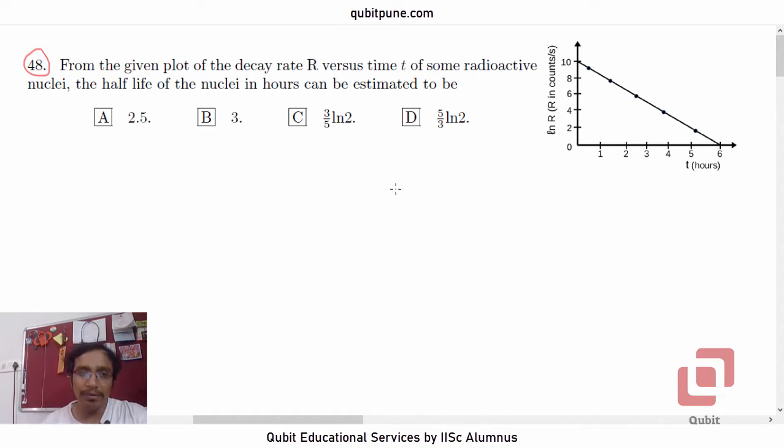The statement of the problem is: from the given plot of the decay rate R versus time t of some radioactive nuclei, the half life of the nuclei in hours can be estimated to be 2.5, 3, 3 by 5 ln 2, and 5 by 3 ln 2.